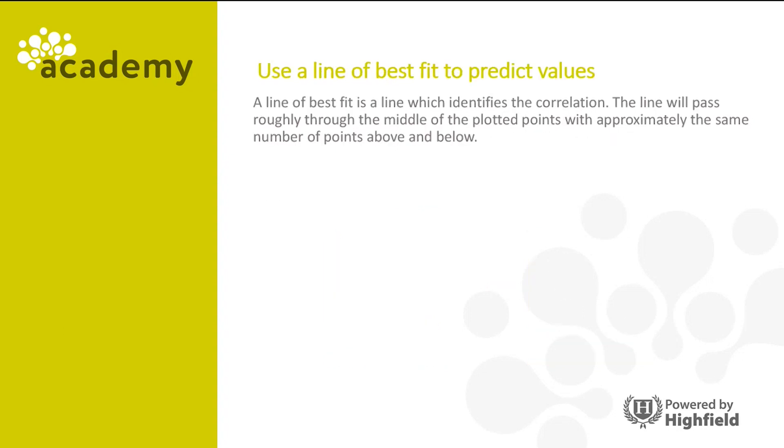The line of best fit is a line which identifies the correlation. The line will pass roughly through the middle of the plotted points with approximately the same number of points above and below.